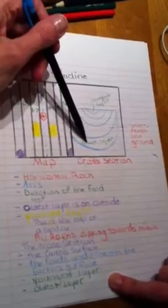This is the oldest layer and the folds. These are folds underneath the earth's surface, all underneath the ground. That's the cross section of this syncline.